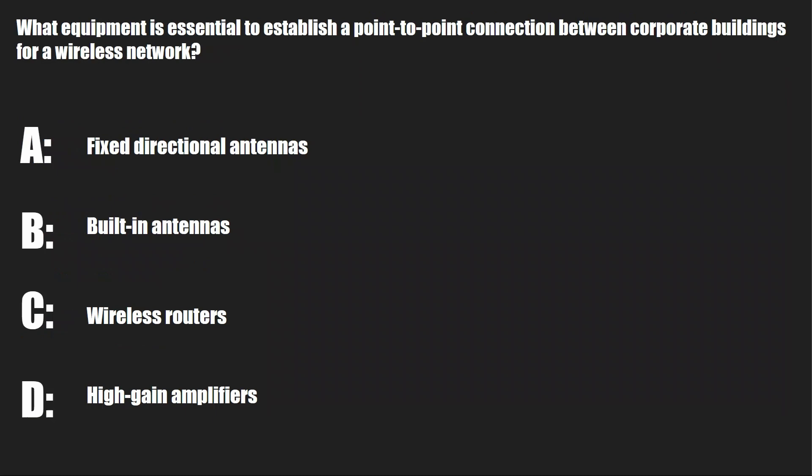What equipment is essential to establish a point-to-point connection between corporate buildings for a wireless network? A, fixed directional antennas. B, built-in antennas. C, wireless routers. Or D, high-gain amplifiers.